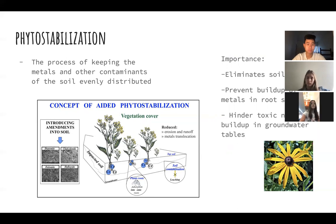A key practice used to maintain phytostabilization is the addition of soil amendments. Examples of these soil amendments include phosphate agents — phosphates, which are agents that make the soil more alkaline — biosolids, and other organic matter. When added to the soil, these amendments cause the soil to become less porous, and as a result the metals and nutrients in the soil are less likely to pass through and into the groundwater tables.